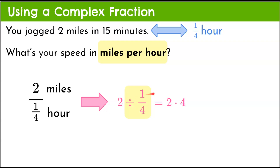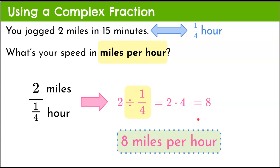To divide, we change division to multiplication and multiply by the reciprocal — we flip it. So one-fourth becomes four over one, or four. Two multiplied by four is eight, giving us eight miles per hour. We keep our miles-per-hour label from the complex fraction and just divide to put it in simplest form.